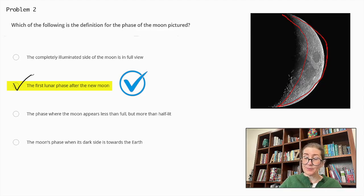Why are the others incorrect? From the top, the completely illuminated side of the moon is in full view. This would describe the full moon, which is not the phase shown in our image. So we can cross that out. The phase where the moon appears less than full but more than half lit. This describes the gibbous phase, which is not shown here as the moon in our image is less than half lit. Lastly, we have the moon's phase when its dark side is towards the Earth. This describes the new moon, where the moon is not visible from Earth, which is not the case in this image. Thus, the moon pictured in this image is the first lunar phase after the new moon.